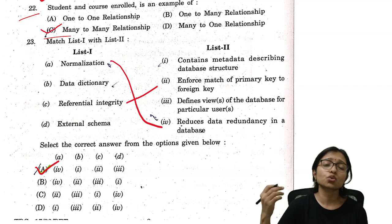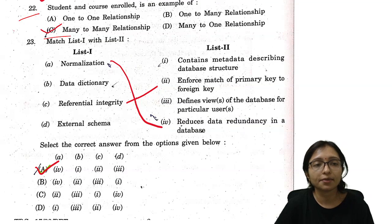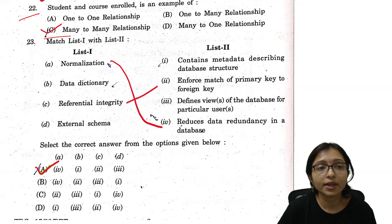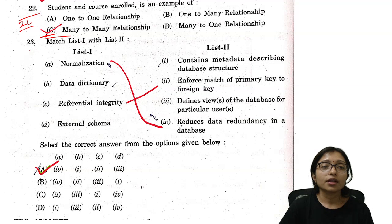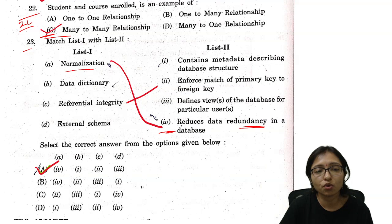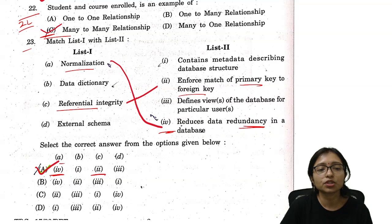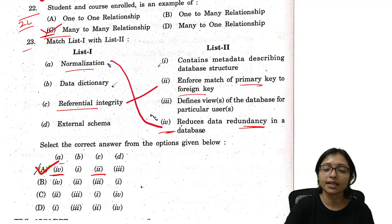Question number 22: Student and Course enrollment is an example of many-to-many relationship — many students can enroll in many courses and many students can be in many courses. Answer is option C. Question number 23: Match the following — normalization reduces redundancy, so A matches with 4. Referential integrity involves primary key and foreign key, so C matches with 2. Option A is the correct answer.